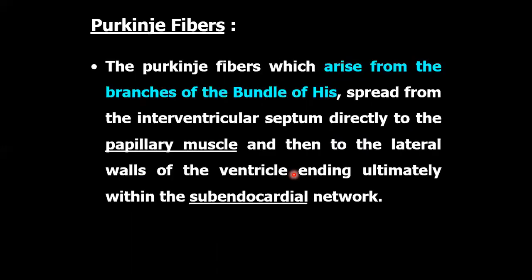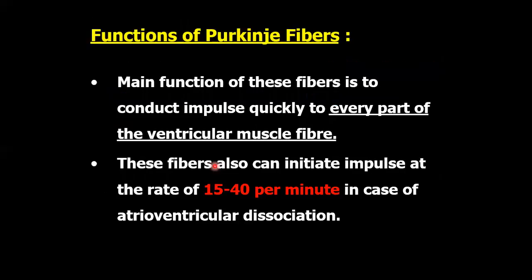Purkinje fibers arise from the branches of the bundle of His and spread from the interventricular septum directly to the papillary muscles and then to the subendocardial network. The main function of these fibers is to conduct the impulse to every part of the ventricular muscle fiber. Their conduction rate is 35 to 40 per minute.